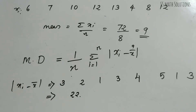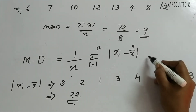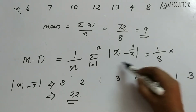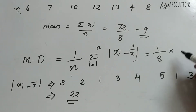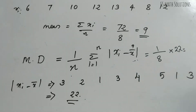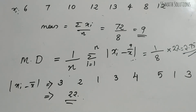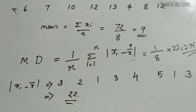Now we can find the mean deviation. Mean deviation = (1/n) × summation |xi − x̄| = (1/8) × 22 = 22/8 = 2.75. So 2.75 is the mean deviation about the mean for this ungrouped data. Remember: the formula is (1/n) × summation |xi − x̄| for ungrouped data.